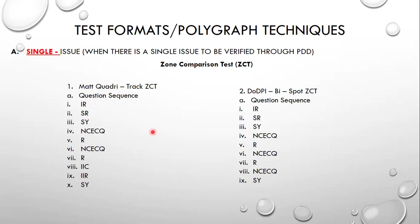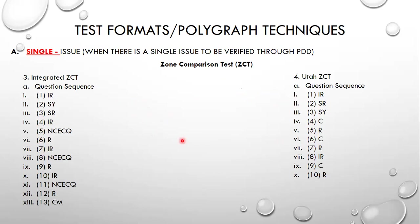These are some of the formats for polygraph techniques. For a single issue — when there is a single issue to be verified — we use the zone comparison test (ZCT). The question sequences include the Utah ZCT, the VODPI by spot ZCT, and the integrated ZCT, each with their own question sequence: relevant, SR, SY, NCEQ. These are the sequences you can use.